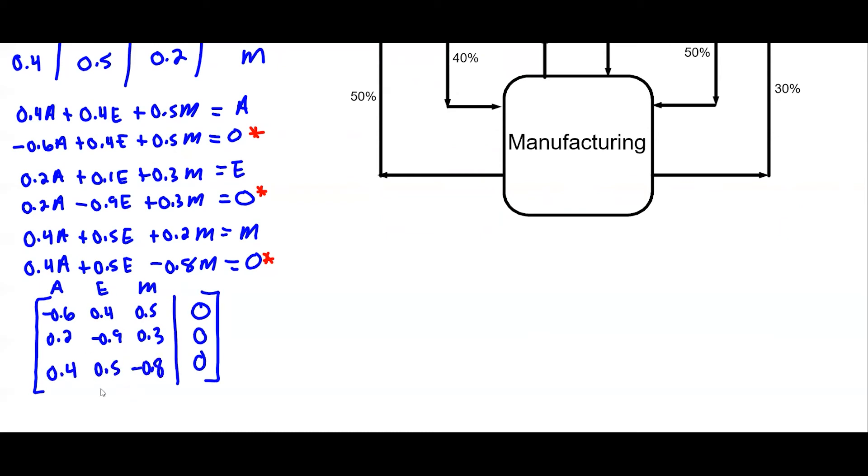Your main diagonal should have negative values in it and I'll reduce this in a calculator.